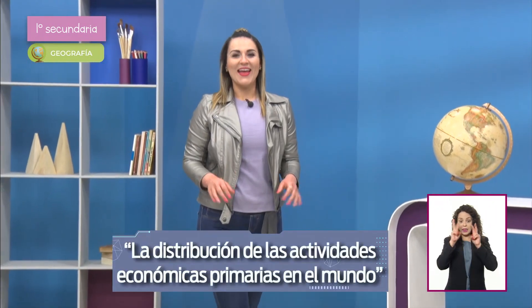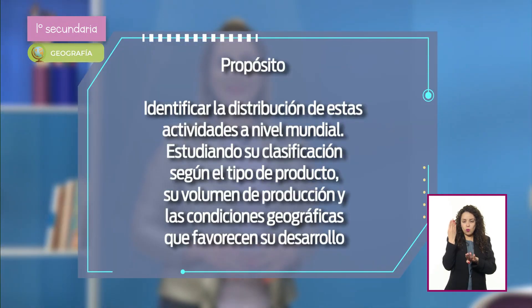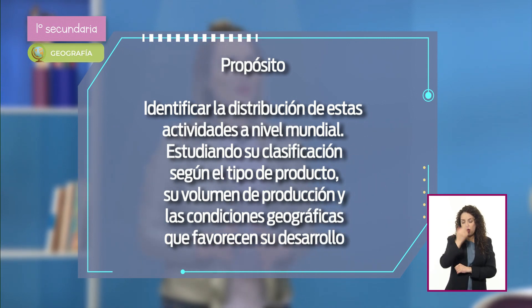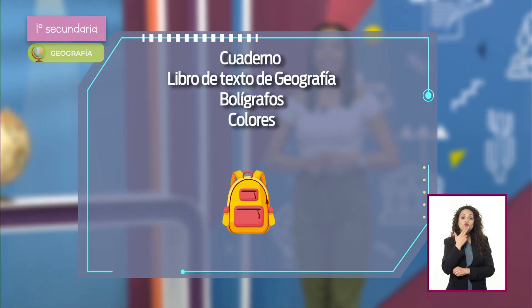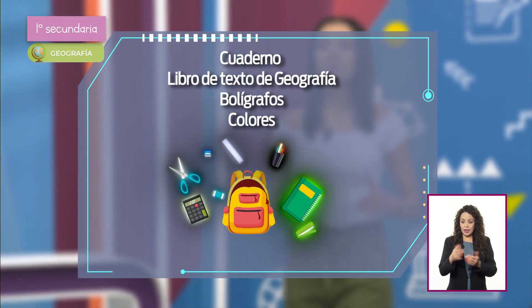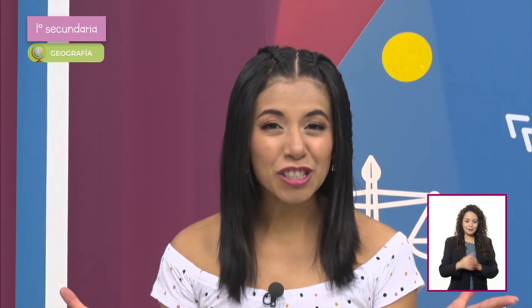Trataremos un tema muy interesante: la distribución de las actividades económicas primarias en el mundo. El propósito será identificar la distribución de estas actividades a nivel mundial, estudiando su clasificación según el tipo de producto, su volumen de producción y las condiciones geográficas que favorecen su desarrollo. Revisemos los materiales que necesitarán: cuaderno de notas, libro de texto de geografía, bolígrafos y colores para destacar los conceptos más importantes.